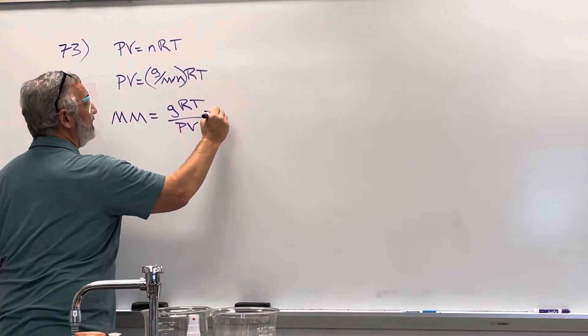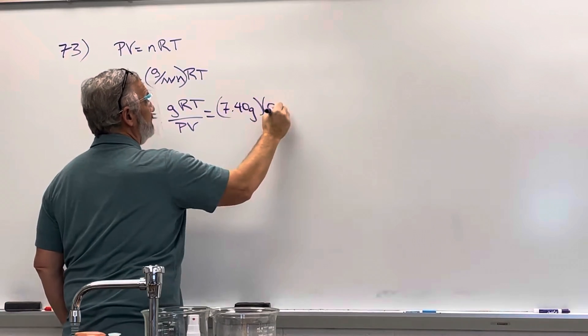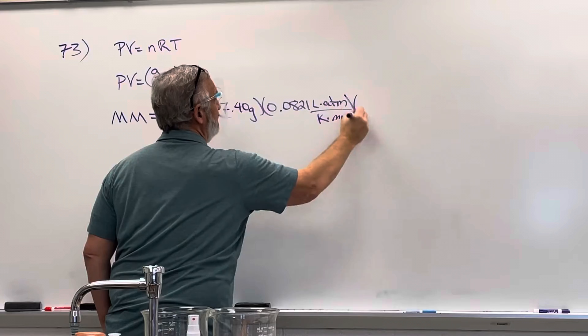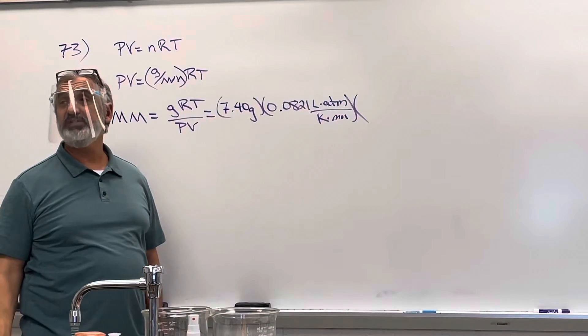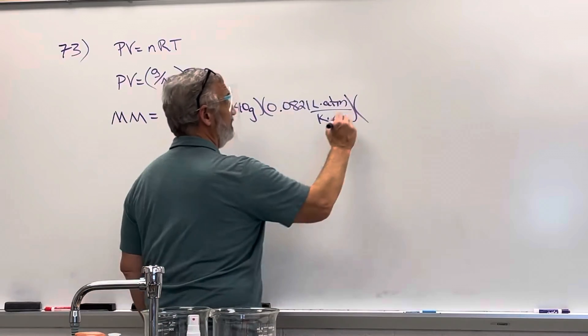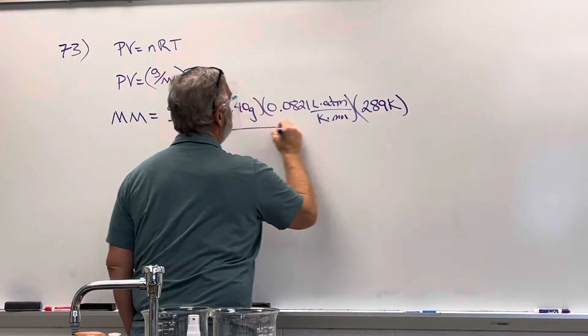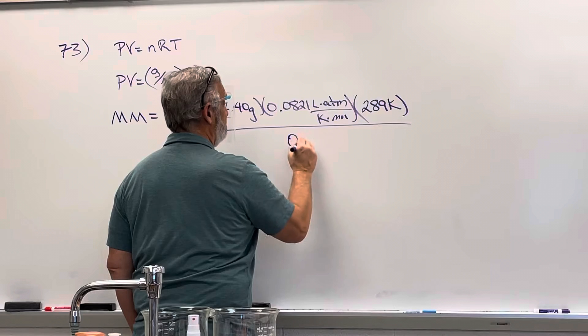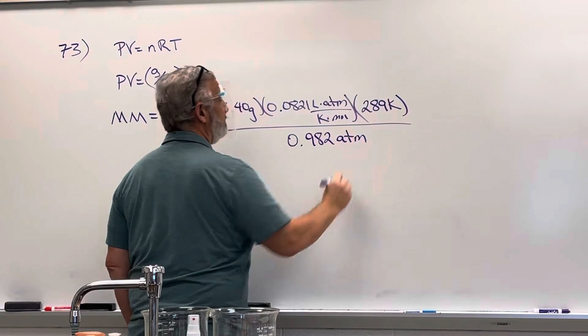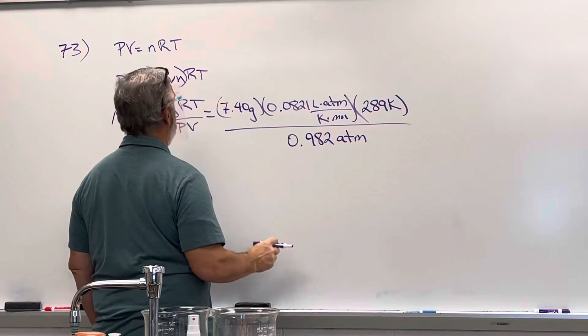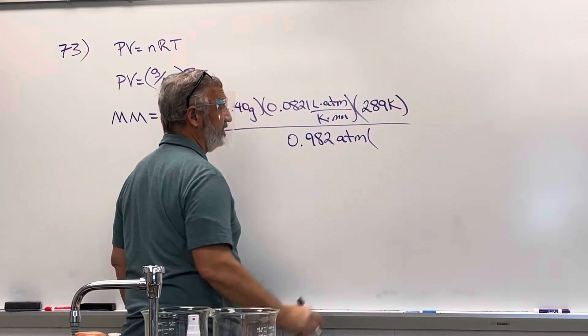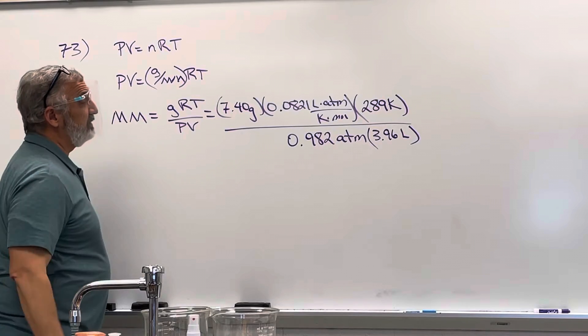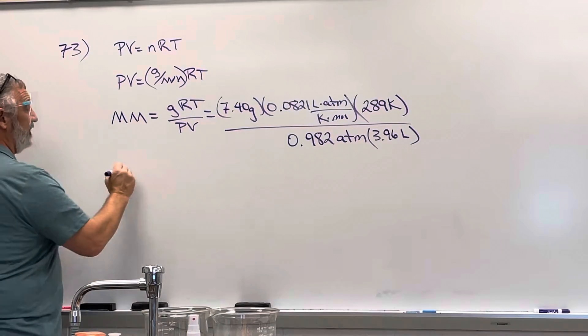So we can just plug in the 7.40 grams, 0.0821 liter atmospheres per Kelvin mole. The temperature is 16 degrees, so you add 273 makes 289. The pressure is 0.982 atmospheres. The volume is 3.96 liters because it's gRT over PV, not gRT over P.